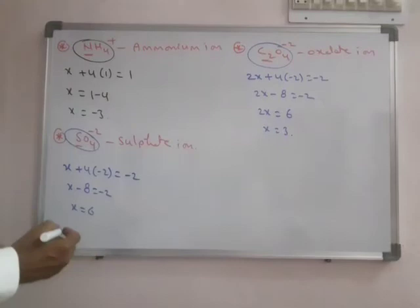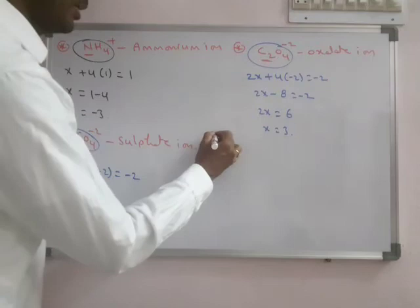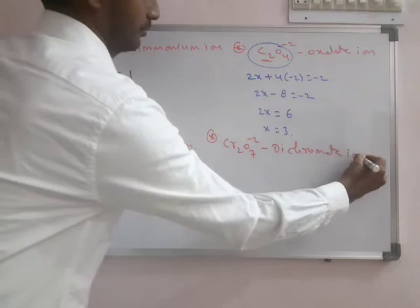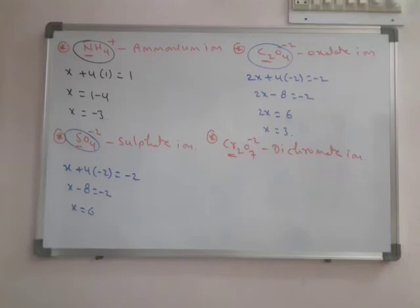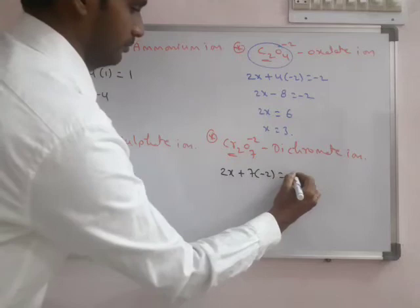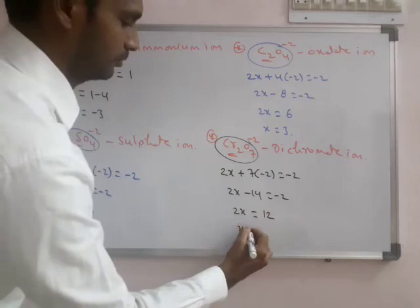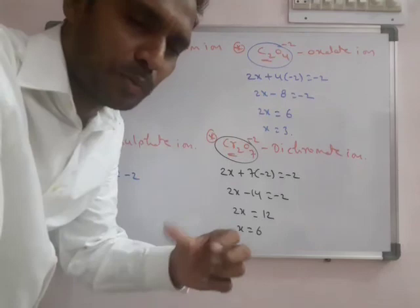Each carbon has a plus three oxidation state in this ion. For dichromate Cr2O7 2−: x plus 7 into minus 2 equals overall charge minus two, giving chromium plus six. Potassium dichromate K2Cr2O7 — when we remove potassium, we get Cr2O7 2−, and the chromium oxidation state is the same plus six.